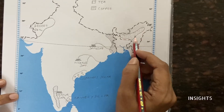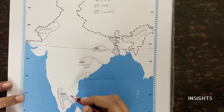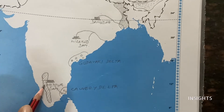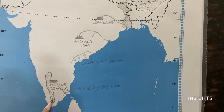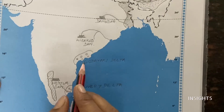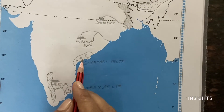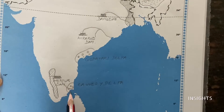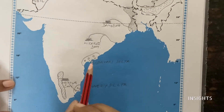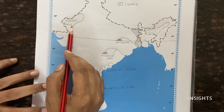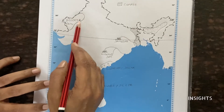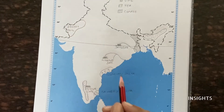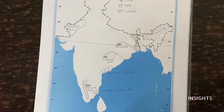Next, tea — one of the world's top tea-producing areas is Assam, so we marked that in the northeast. Then moving south, we marked the coffee-growing areas: Coorg, Ooty, and Kodaikanal. Finally, for paddy cultivation, we marked the Godavari delta and Kaveri delta. The last item was desert soil, which is in Rajasthan.